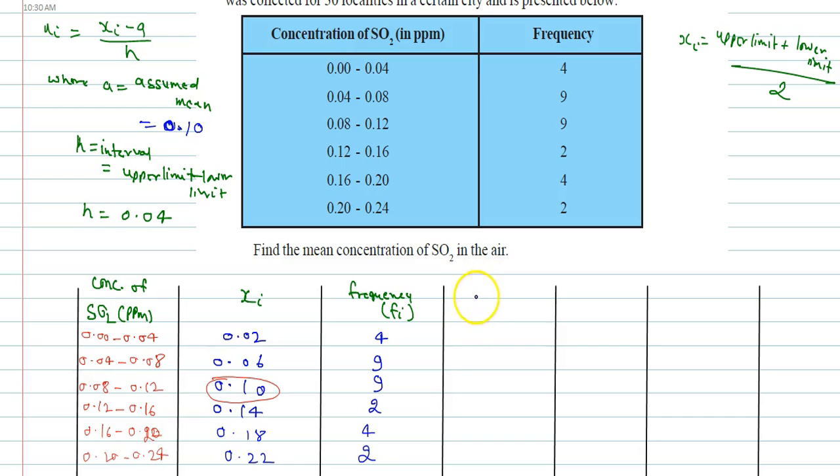So first we shall calculate di, the deviation, which is xi minus 0.10. In first, 0.02 minus 0.10 will be minus 0.08. 0.06 minus 0.10 will be minus 0.04. Here it will be 0.0. Here I can write 0.04, 0.08, and 0.22 minus 0.10 will be 0.12.